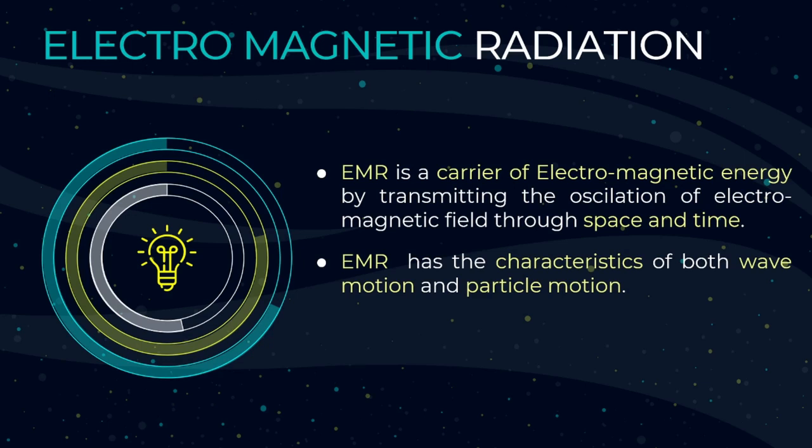Electromagnetic radiation is a carrier of electromagnetic energy by transmitting the oscillation of an electromagnetic field through space and time. Electromagnetic radiation has the characteristics of both wave motion and particle motion, which means it is a type of wave that transmits electromagnetic energy and has both an electric field and a magnetic field. Because of that, it has both wave motion characteristics as well as particle motion characteristics.